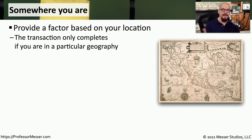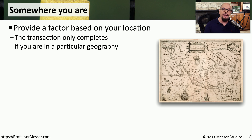One authentication attribute that doesn't necessarily identify a specific individual, but can help with the authentication process, is somewhere you are. This provides an authentication factor based on where you might be geographically. For example, authentications may be allowed if you are in the United States, but if you're outside of the United States, the authentication process would fail.